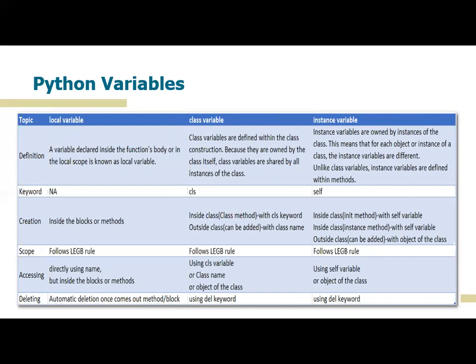Regarding creation: local variables will be inside the blocks or methods. Class variables will be inside the class with the 'cls' keyword, and outside the class we can use the class name. Instance variables can be found inside the init method or inside the instance method as well, used with the keyword 'self'. Outside the class we can also add an instance variable by using the object of the class. All of this we will see in the demo.